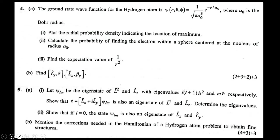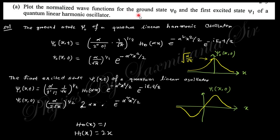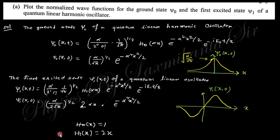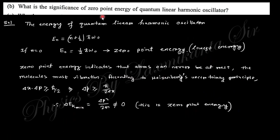The first question says: plot the normalized wave functions for the ground state ψ₀ and the first excited state ψ₁ of the quantum linear harmonic oscillator. This is the ground state at t=0, which gives one. The first excited state will look like this. The plot for the ground state is this one, and this is the first excited state.